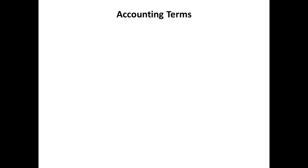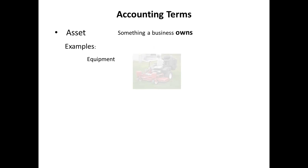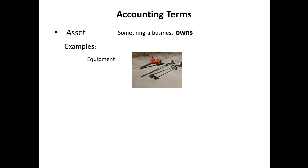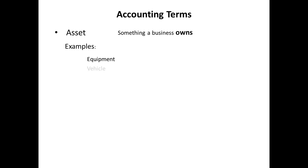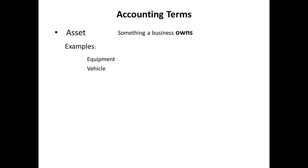Now let's look at each term more closely. As we do this, we'll use my neighbor the lawn guy as an example. My neighbor really does own and operate a lawn care landscaping business. What kinds of things would you expect my neighbor's lawn and landscaping business to own? Equipment — like lawn mowers, weed eaters, leaf blowers, trimmers — vehicles, a pickup truck, a trailer.